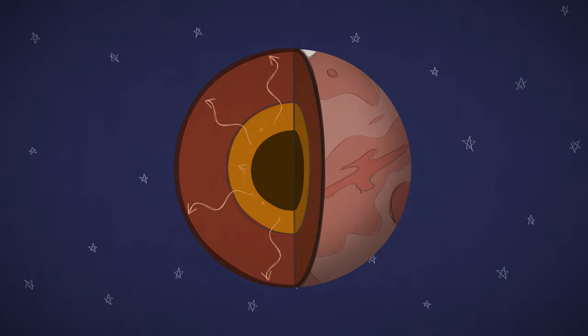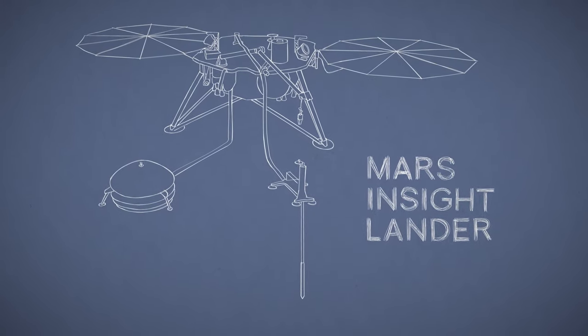Studying how heat flows out from a planet can tell us a lot. NASA's InSight mission carries a special probe to burrow down and measure heat flow.